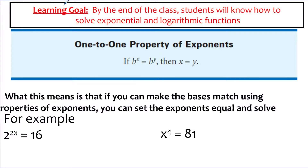What does that really mean? If I give you a problem and say 3 to the second is equal to 3 to the x, what we're basically saying is if the bases match, then the exponents have to be equal to each other. I couldn't put any other number in the x position except 2 and have it be the same as the left-hand side. So if we can get the bases to match, the exponents will be equal to each other.